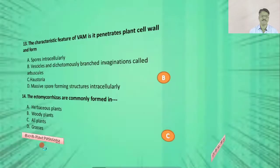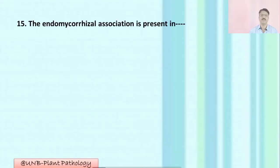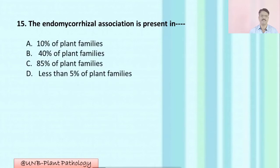Question number fifteen: The endomycorrhizae association is present in — A: 10% of plant families; B: 40% of plant families; C: 85% of plant families; D: less than 5% of plant families. The correct option is C: 85% of plant families.